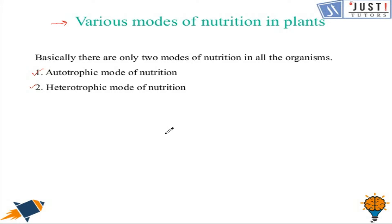Autotrophic mode of nutrition is that mode in which an organism — usually an autotrophic plant — contains a green color pigment in its leaf called chlorophyll and prepares its own food by the process of photosynthesis, which we covered in our last video.